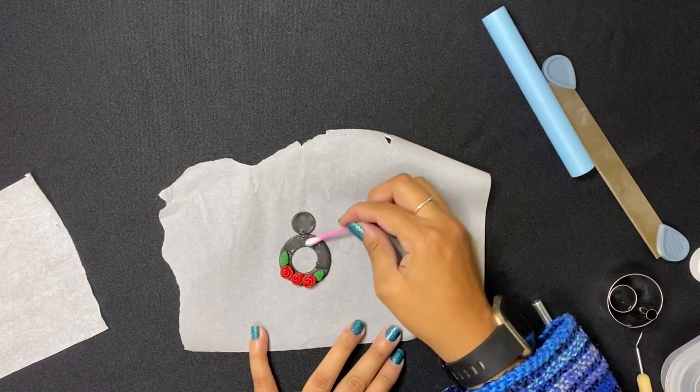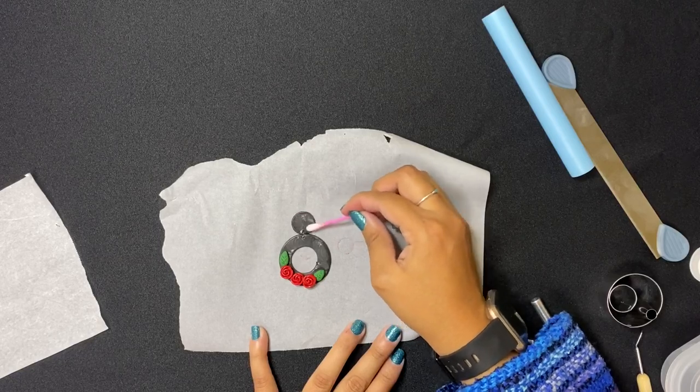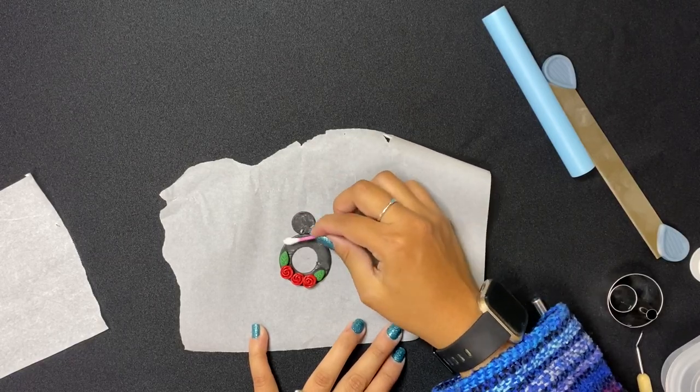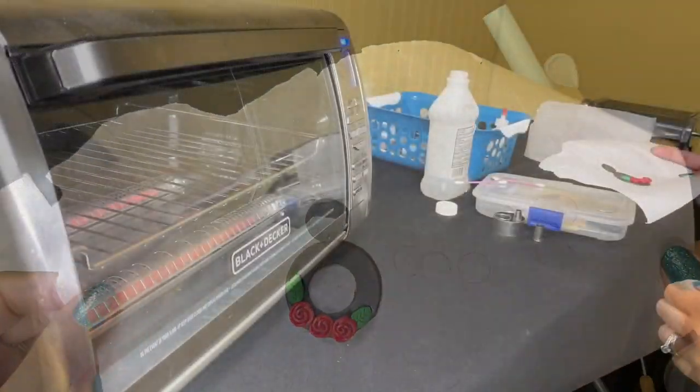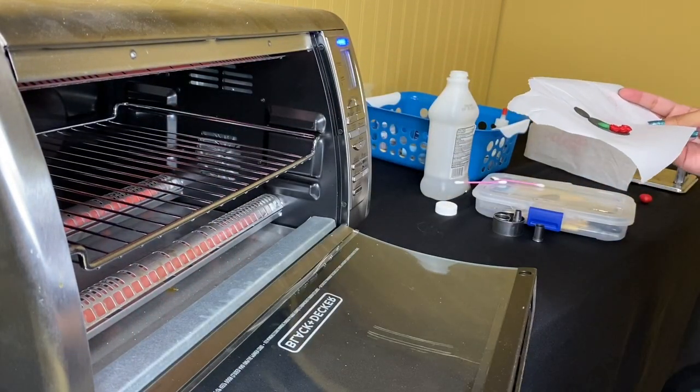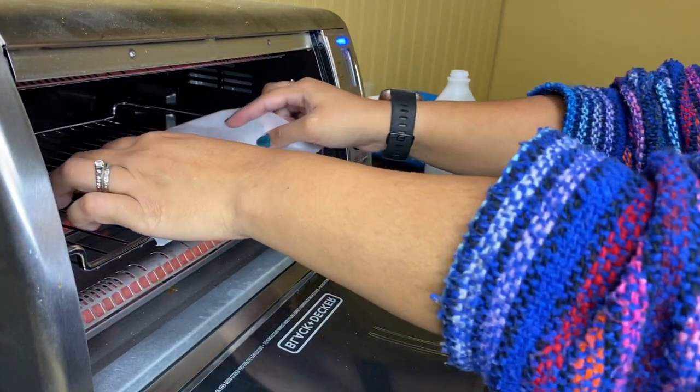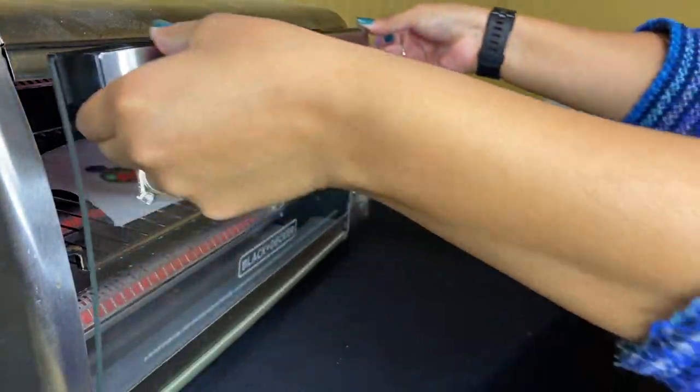Then you're going to take a Q-tip and dip it in rubbing alcohol, and then quickly rub out any fingerprints or any other impurities that you see on top of your earring. If you're using Model Magic, you'll just let your clay dry for 24 hours. However, if you're using the clay that you bake, you will put it in the oven for approximately 10 minutes at 275 degrees.